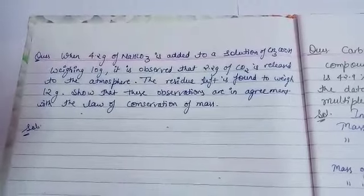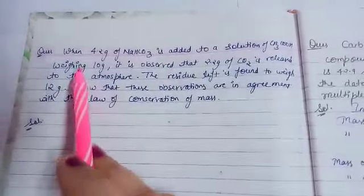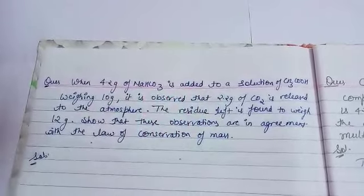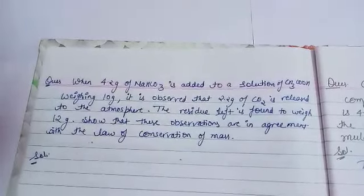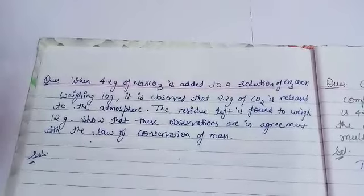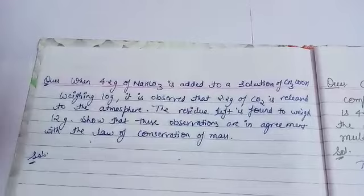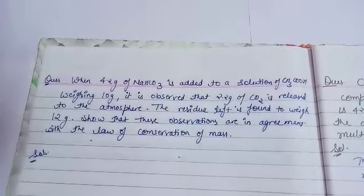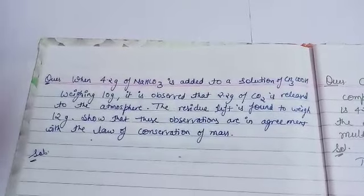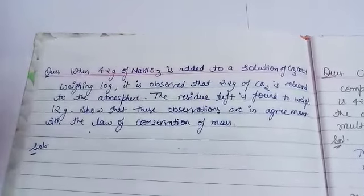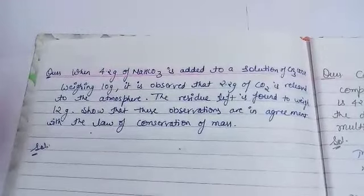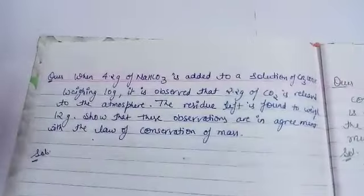In another type of question, you have to prove whether the given data follows the Law of Conservation of Mass or not. For example: when 4.2 g of NaHCO3 is added to 10 g of CH3COOH solution, 2.2 g of CO2 is released and the residue weighs 12 g. Show these observations agree with the Law of Conservation of Mass. Simply calculate the total mass of reactants and total mass of products separately — if both are equal, the law is verified.